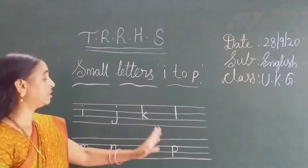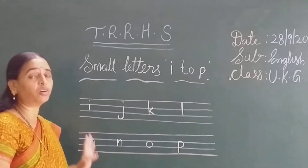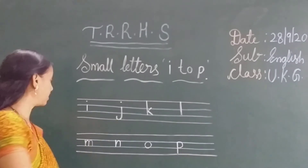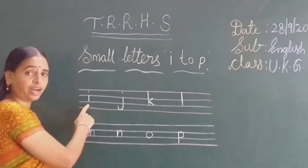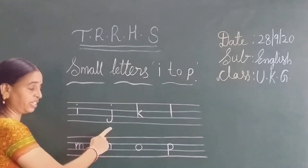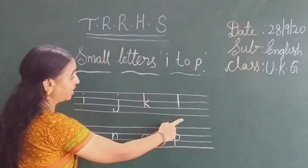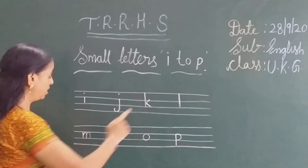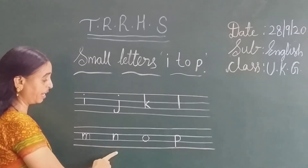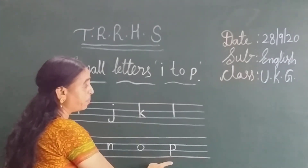These are the letters. Today we have learned how to write in four rows. Read once again: Small I, small J, small K, small L, small M, small N, small O, small P.